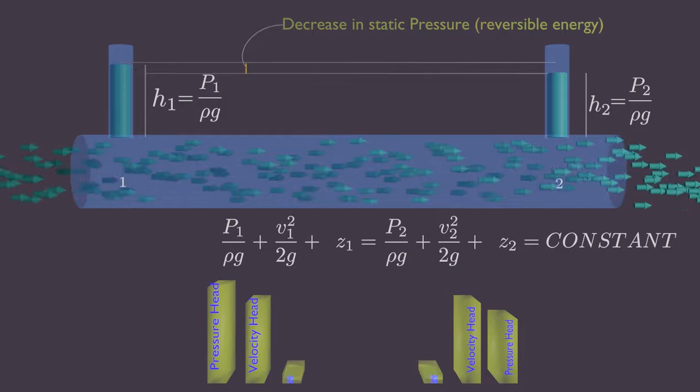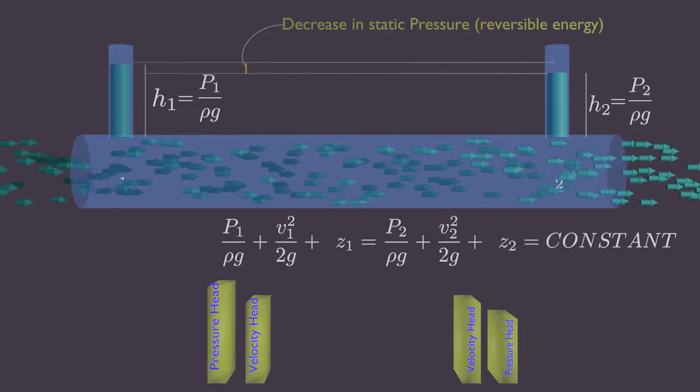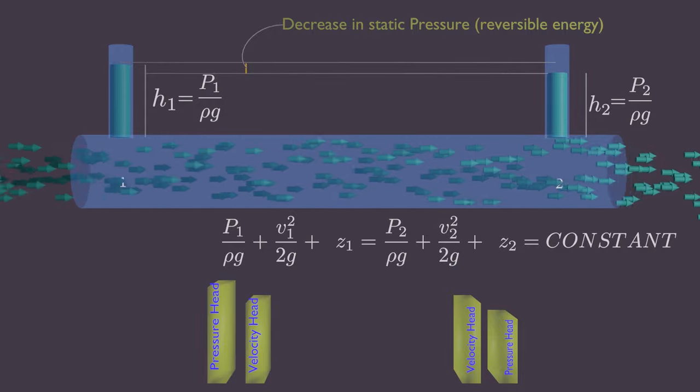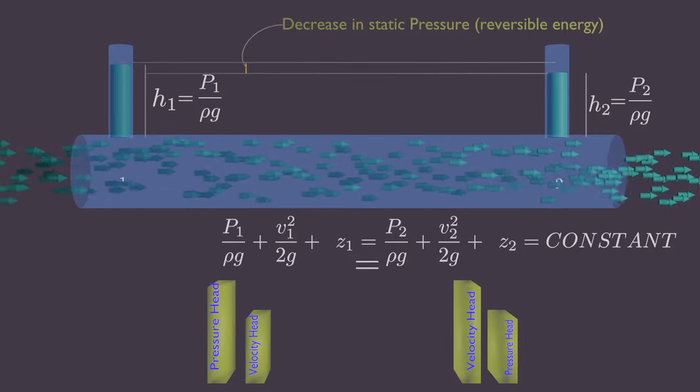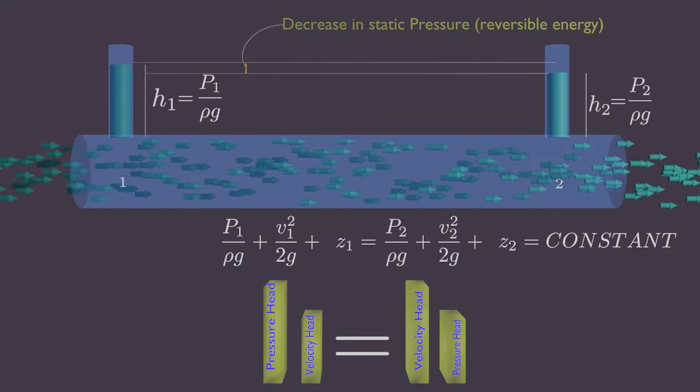And the pipe is horizontal, so there is no datum height effect. So in order to balance the energy equation, velocity must increase at point 2. This is the law of conservation of energy.